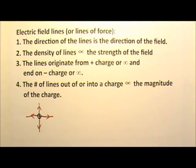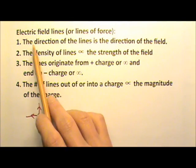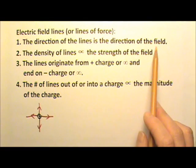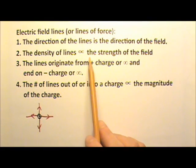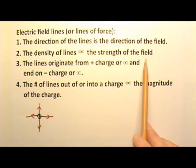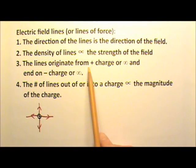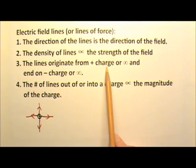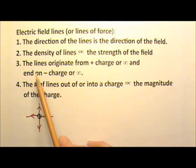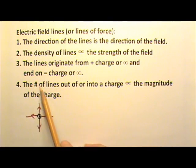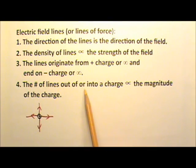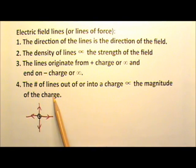There are a few properties of electric field lines we should know. The direction of the lines is the direction of the field. The density of the lines is proportional to the strength of the field. The lines originate from positive charge, or infinity, and end on negative charge, or infinity. The number of lines out of or into a charge is proportional to the magnitude of the charge.